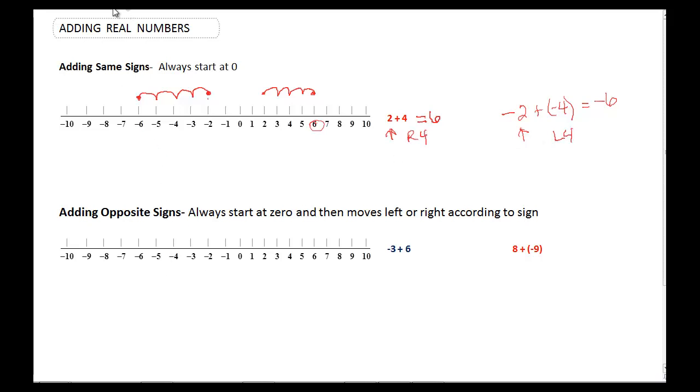Alright, so what happens if we have different signs, like this example of negative 3 plus 6? So again, you start wherever it is. You start at negative 3, and then it asks us to go 6. This is a plus, so we're going to go right 6 units. So from negative 3 we go 1, 2, 3, 4, 5, 6, and we're at 3.